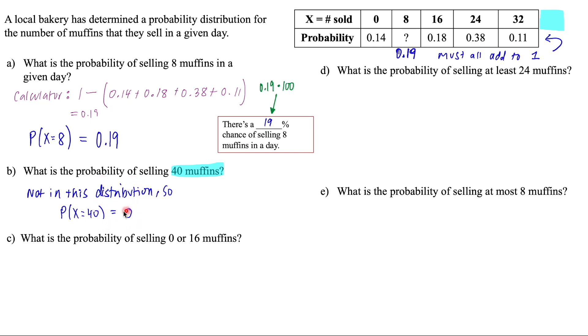it's impossible, not going to happen. So the probability that X is equal to 40 is equal to zero, there is a 0% chance of selling 40 muffins in a day.